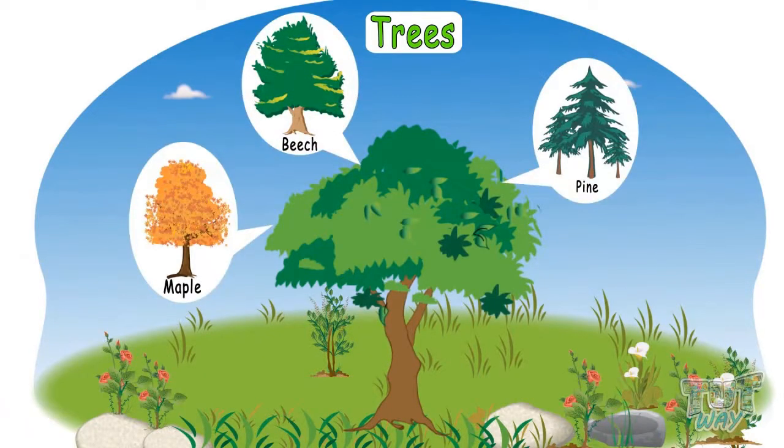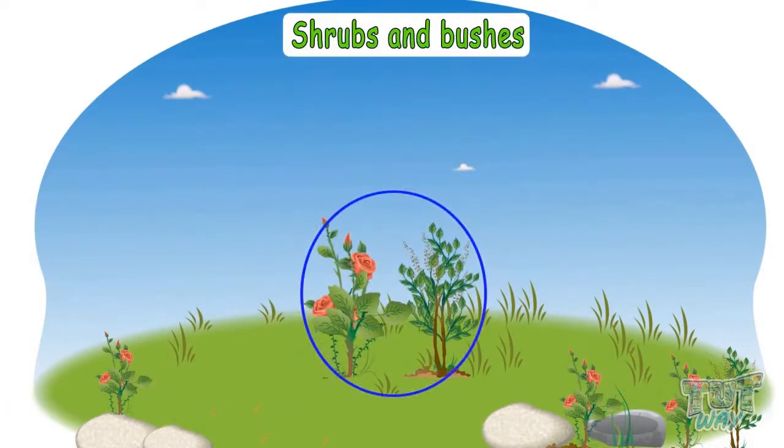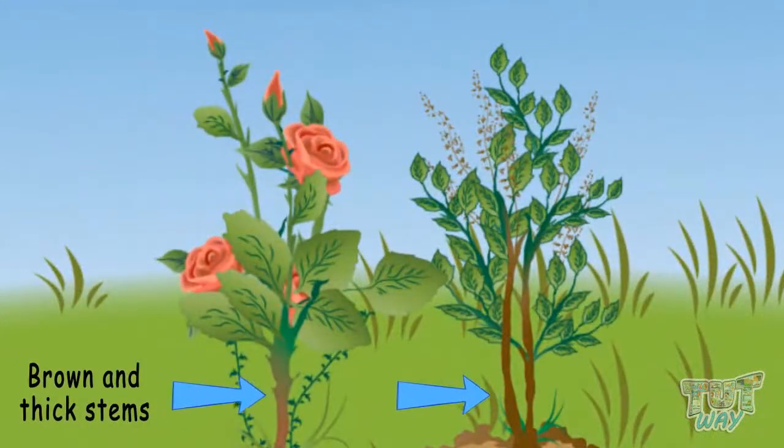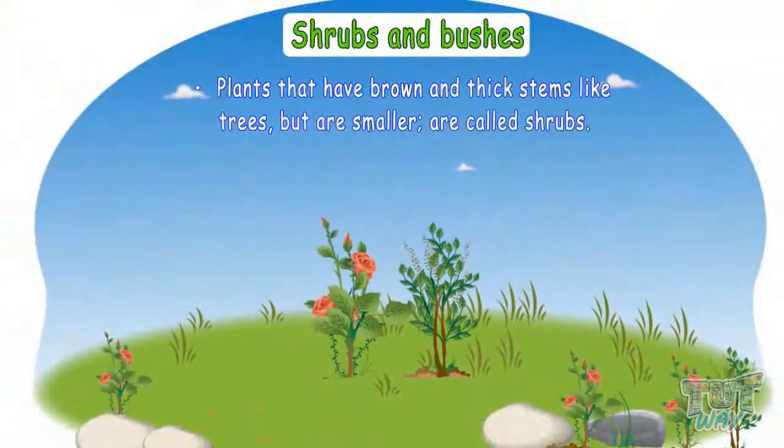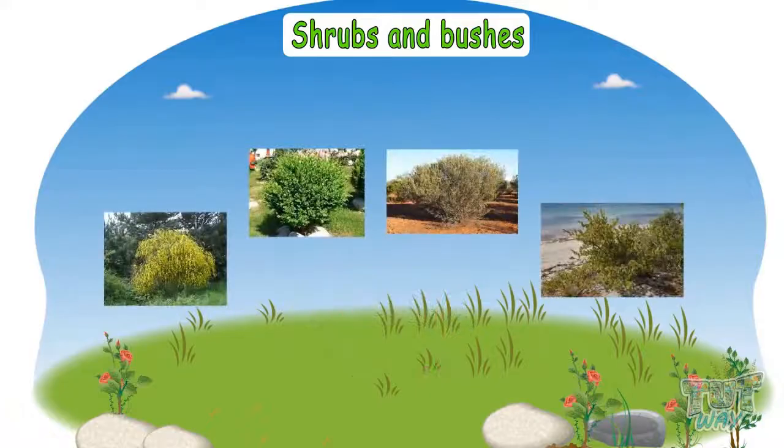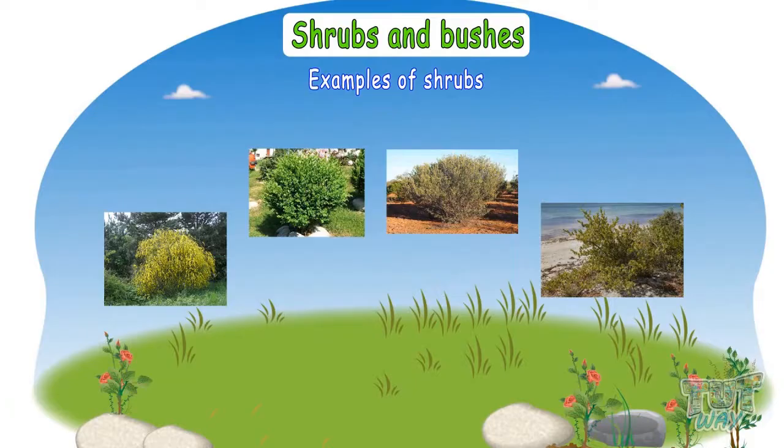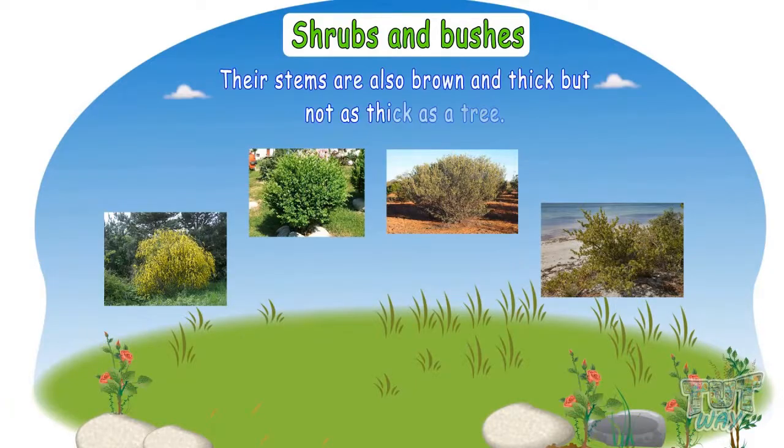Now let's see what are shrubs and bushes. Plants that have brown and thick stems like trees but are smaller than trees are called shrubs. They have many branches. Let's see some shrubs. These are some examples of shrubs. Look, their stems are also brown and thick but not as thick as a tree.